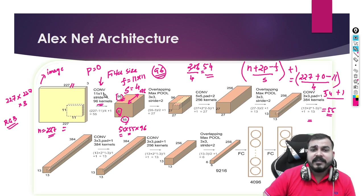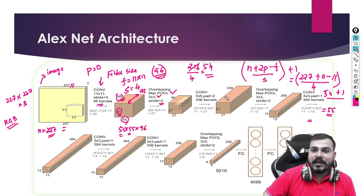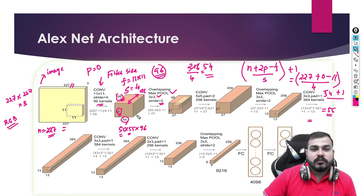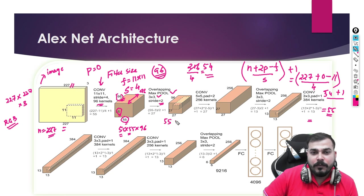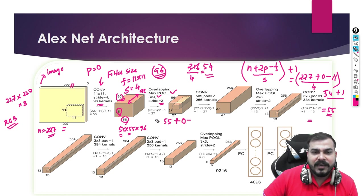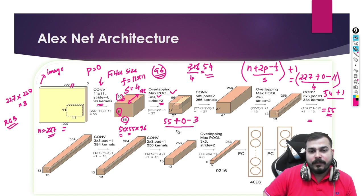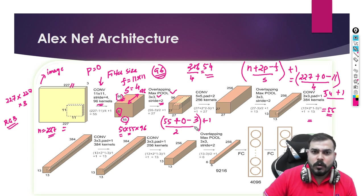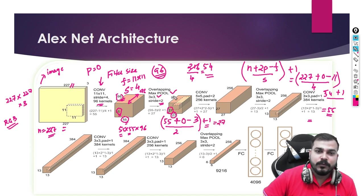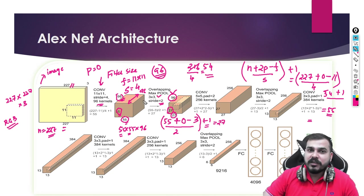In the next step we perform max pooling. Here the pool size is 3×3 and stride is 2. Applying the formula with n=55, P=0, F=3, stride=2: (55 + 0 − 3) / 2 + 1 = 52 / 2 + 1 = 26 + 1 = 27. So the max pooling output is 27×27×96. The depth stays 96 because max pooling doesn't use new kernels.